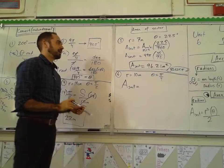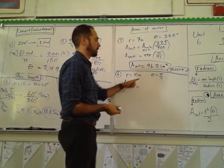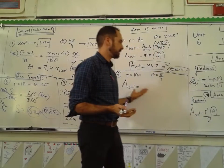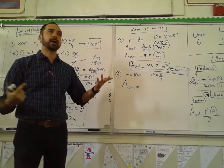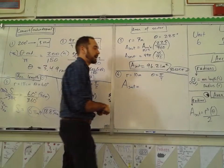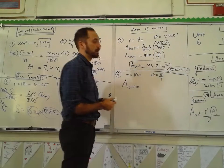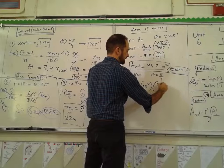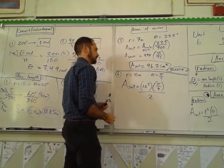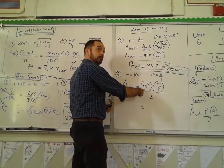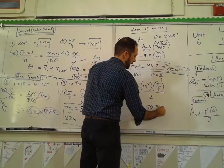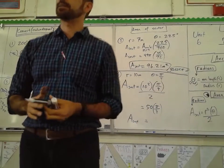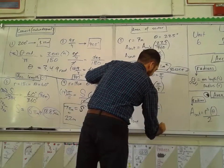The very last one: area of a sector for radians is very straightforward. The formula is derived from the area of a circle times the radian measure over 2π, which reduces to r² times theta divided by 2. With r = 10 and theta = π/4: 100 times π/4 divided by 2 gives 50π/4, or 12.5π meters squared.